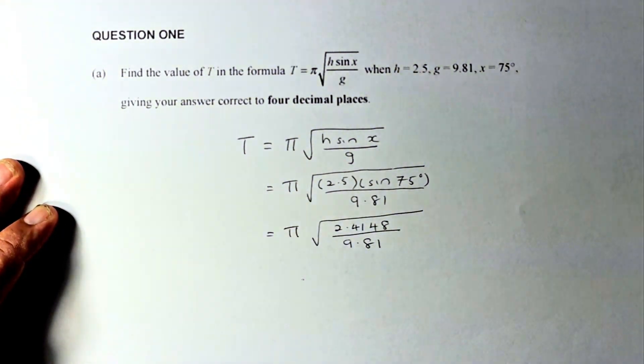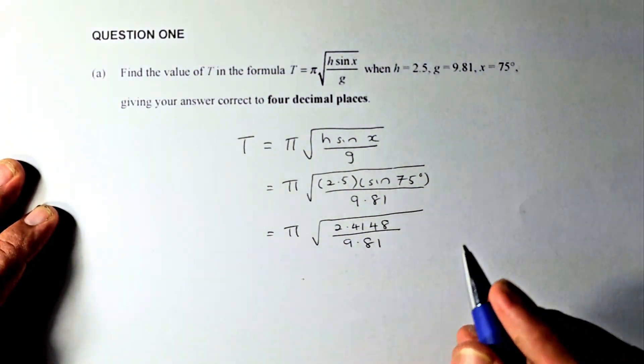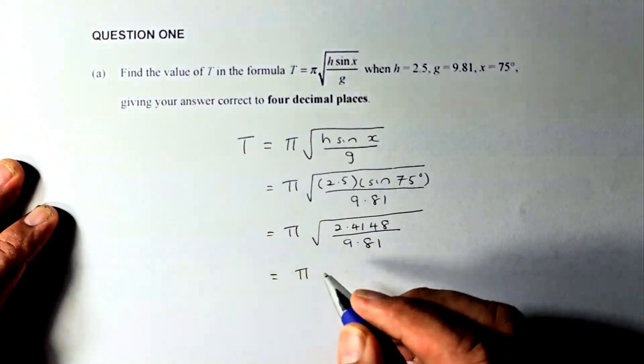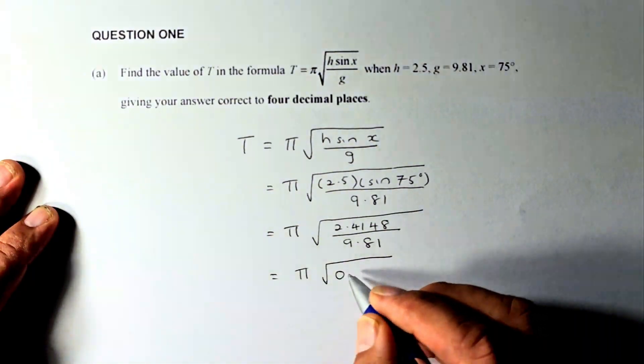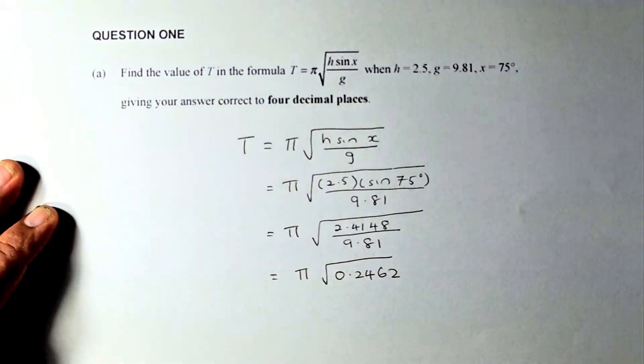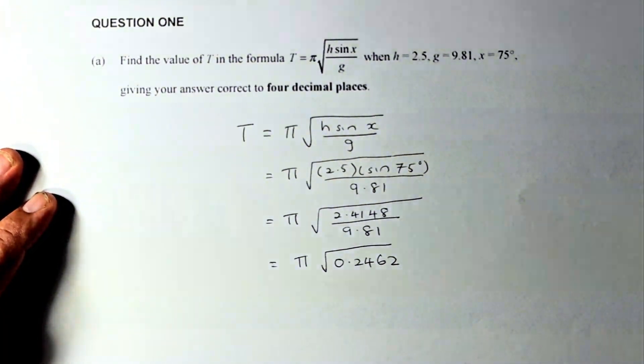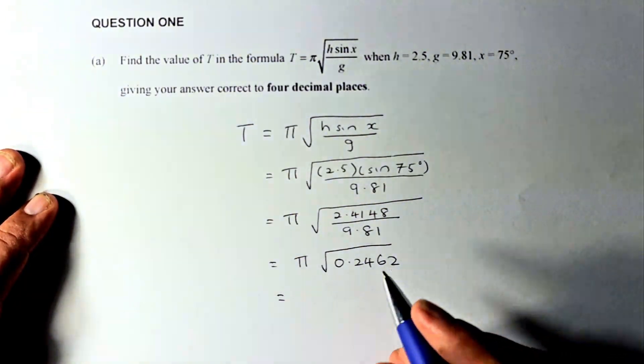So hope you are following me. Now what we're going to do, we are going to take this division here. 2.4148 divided by 9.81 and again I've done before it's going to be square root of 0.2462. Please check with my answers. If I'm wrong please let me know.